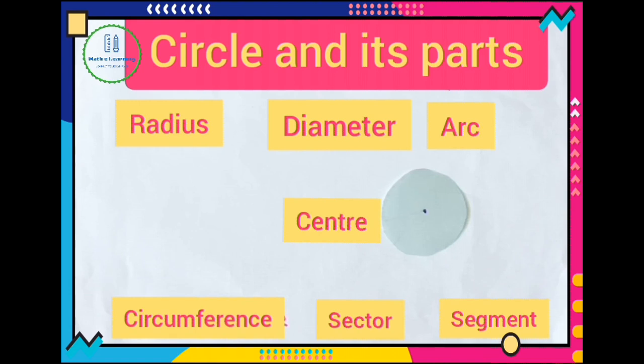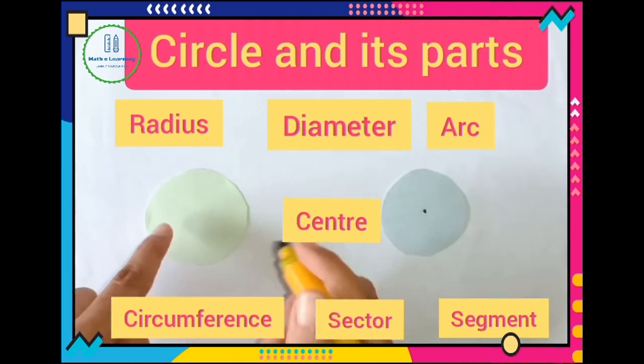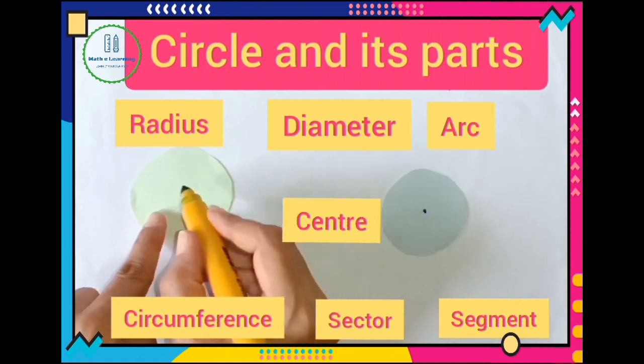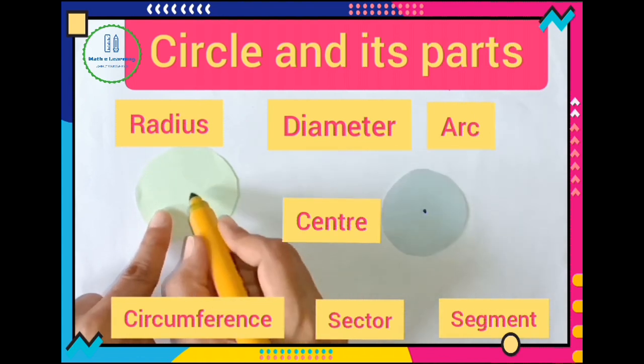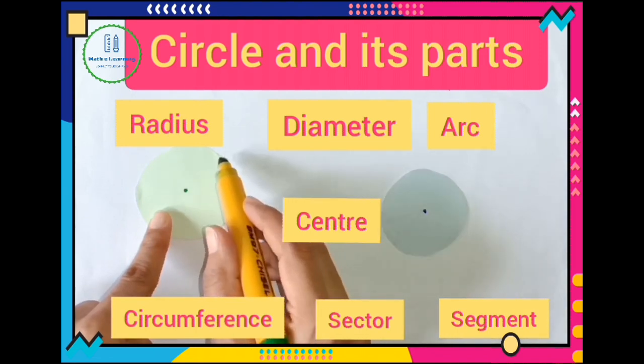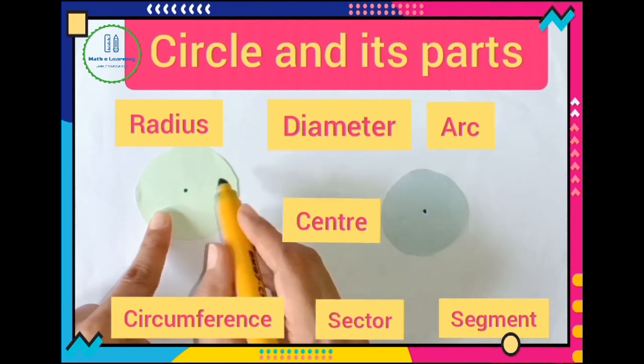Then we understand about next part which is radius. And how do you get radius on the circle? For that we take center point and any points of this border of circle.